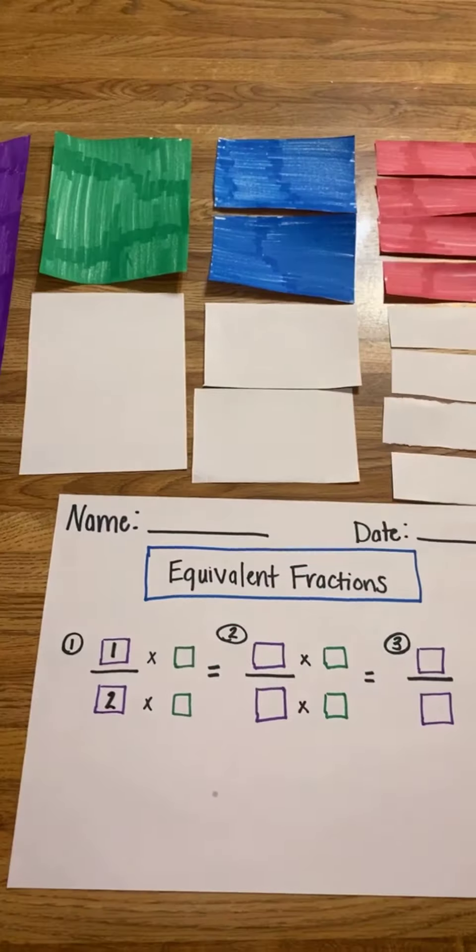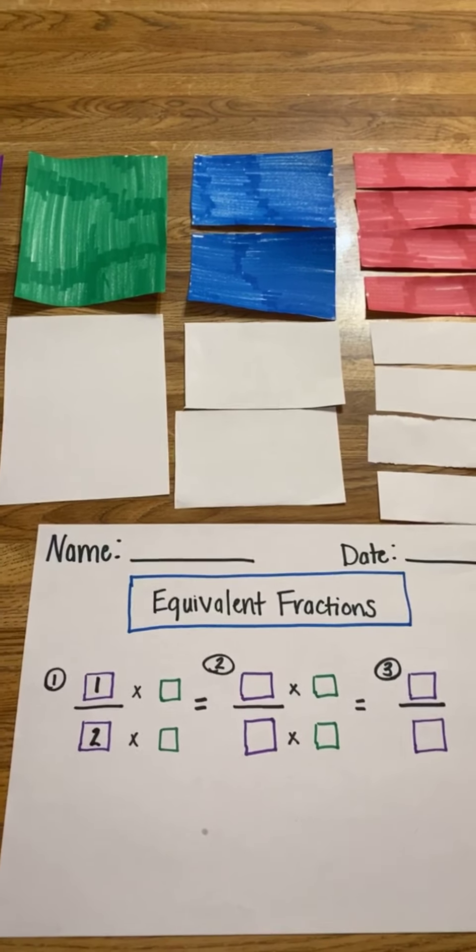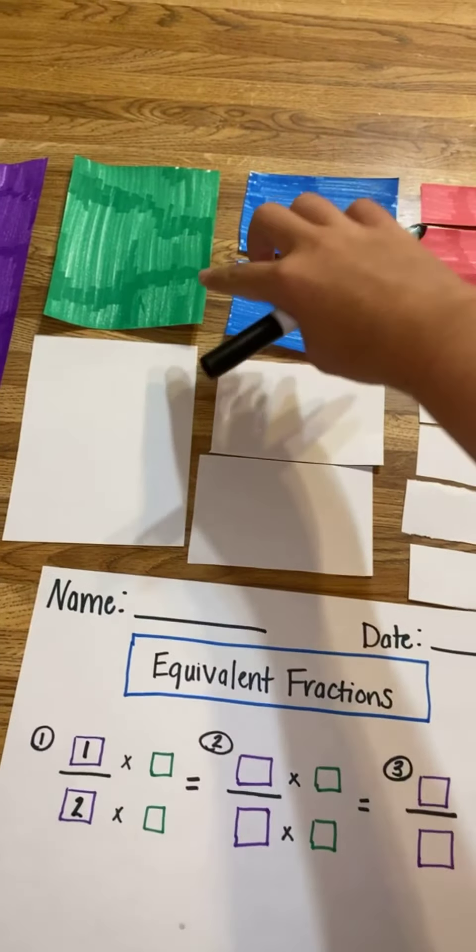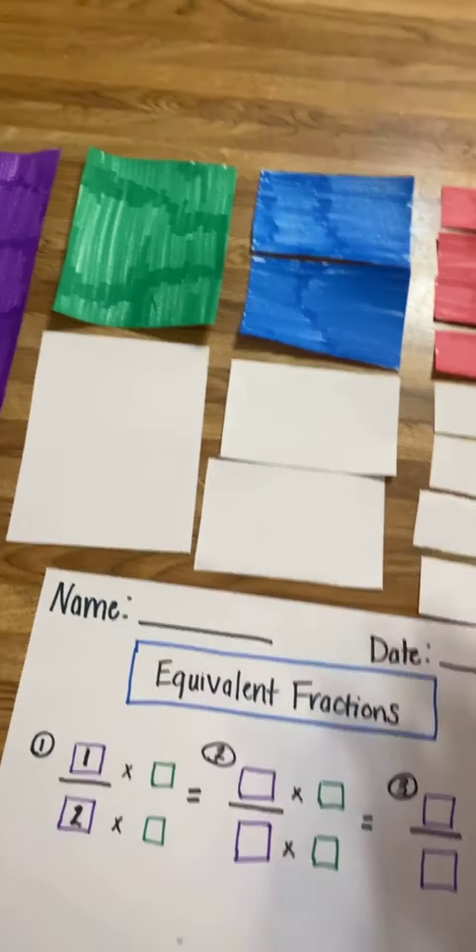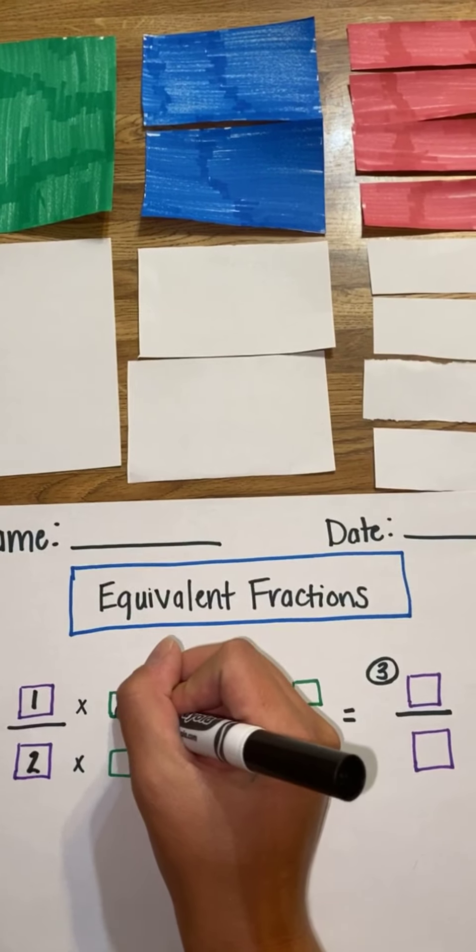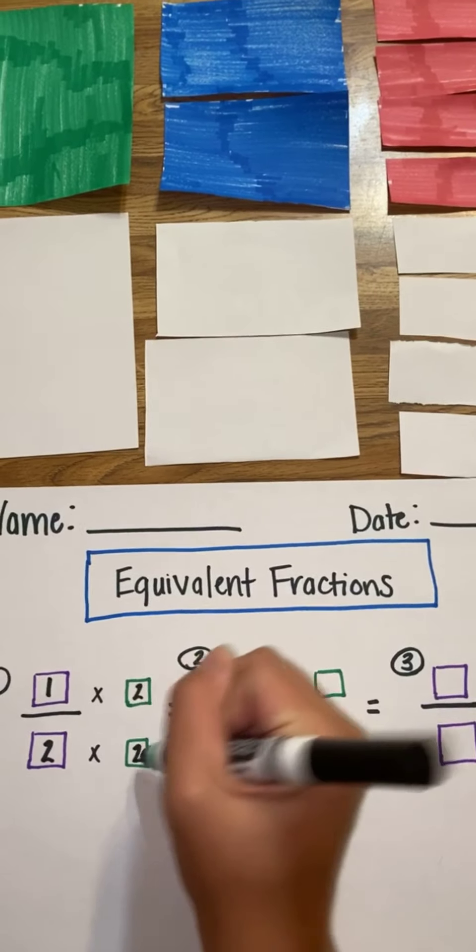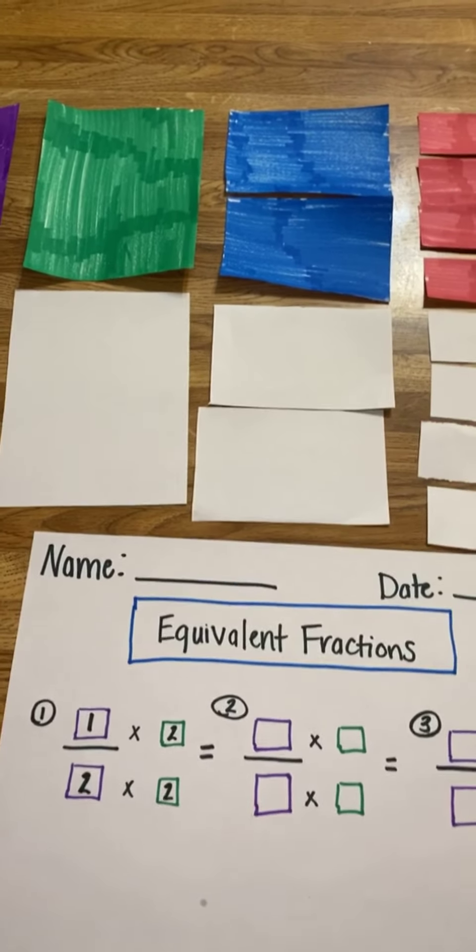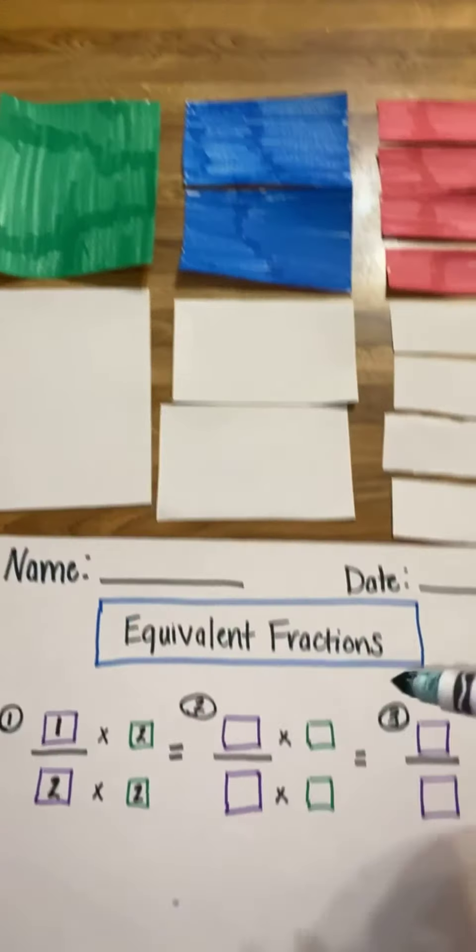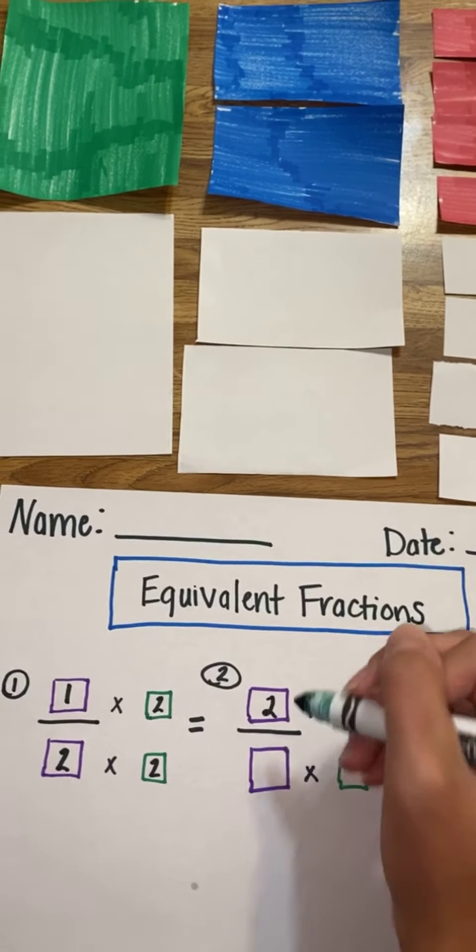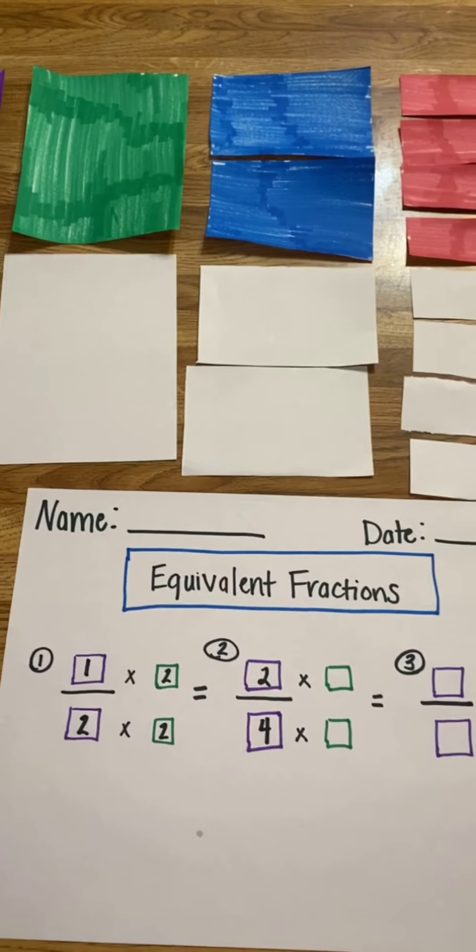Students then know that we multiplied our numerator by 2—1 times 2 will give us two new shaded pieces. So we multiplied by 2, and we do the same thing with our denominator by 2, which gives us the fraction 2/4. Students will then write in 2/4 into the next box.